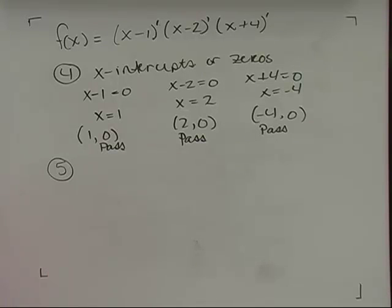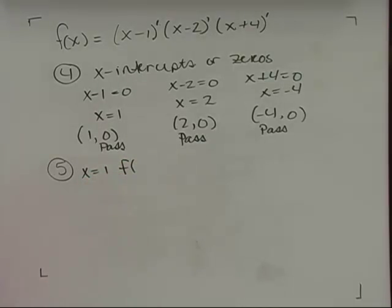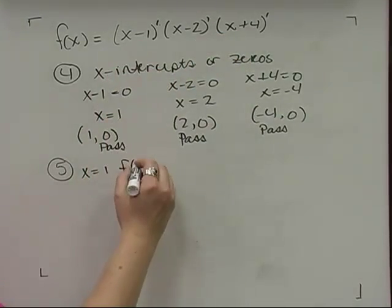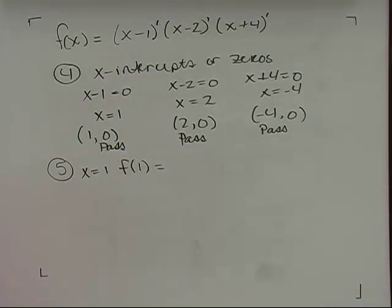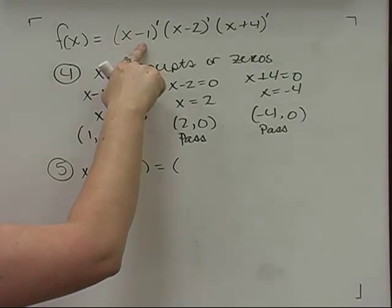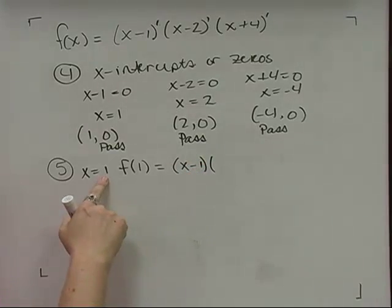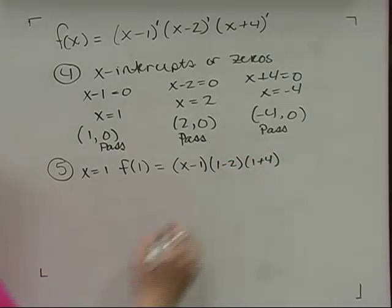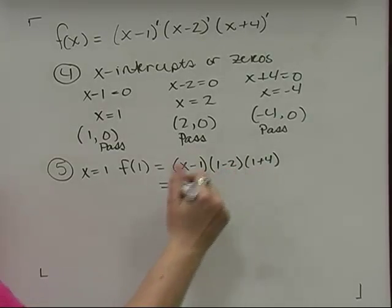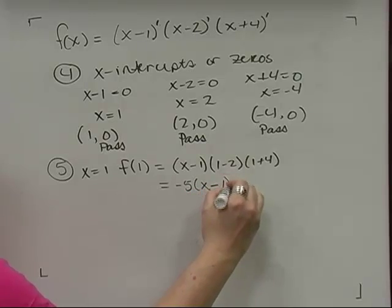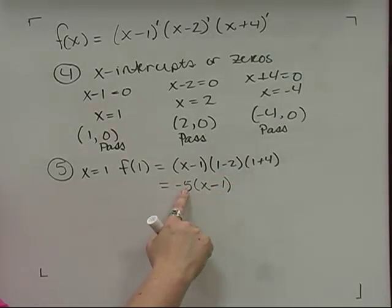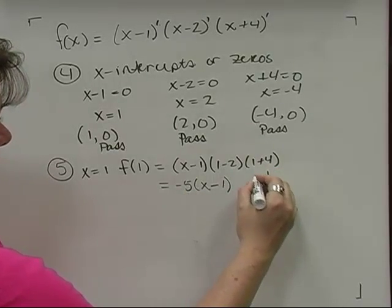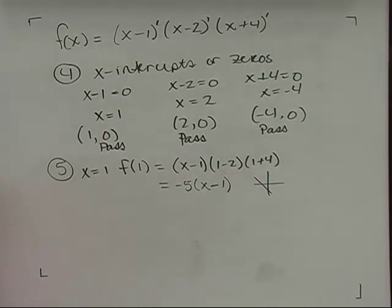To find the local behavior near each zero, I substitute the zero value into all factors except the one that produces zero at that point. At x = 1, I leave the first factor as x and substitute into the others: (1 − 2)(1 + 4) = (−1)(5) = −5. So near x = 1, the function behaves like −5(x − 1) — a linear function with negative slope, decreasing from left to right.